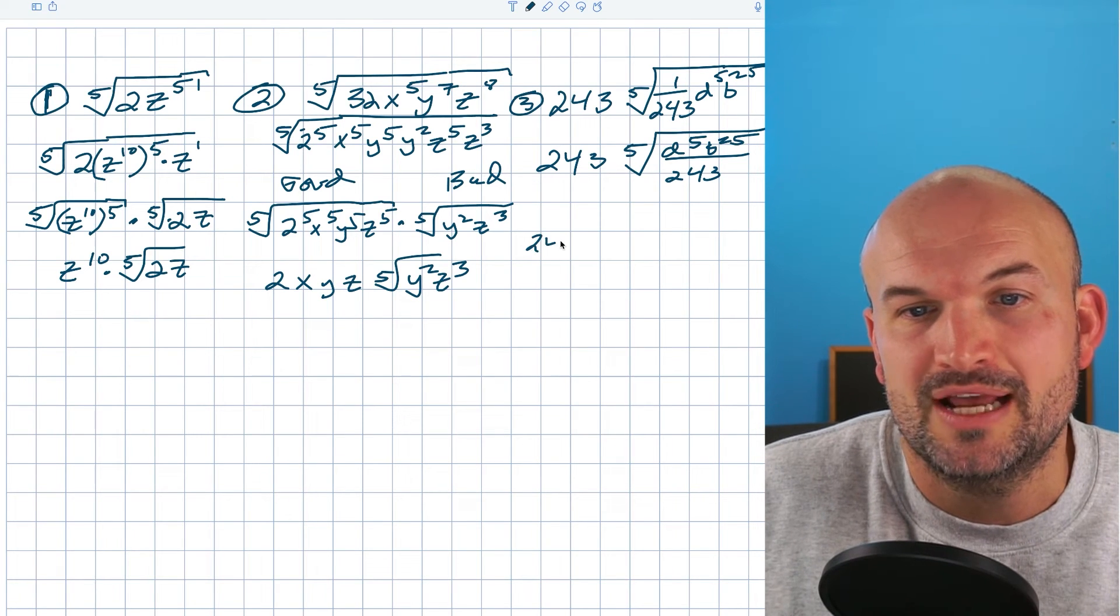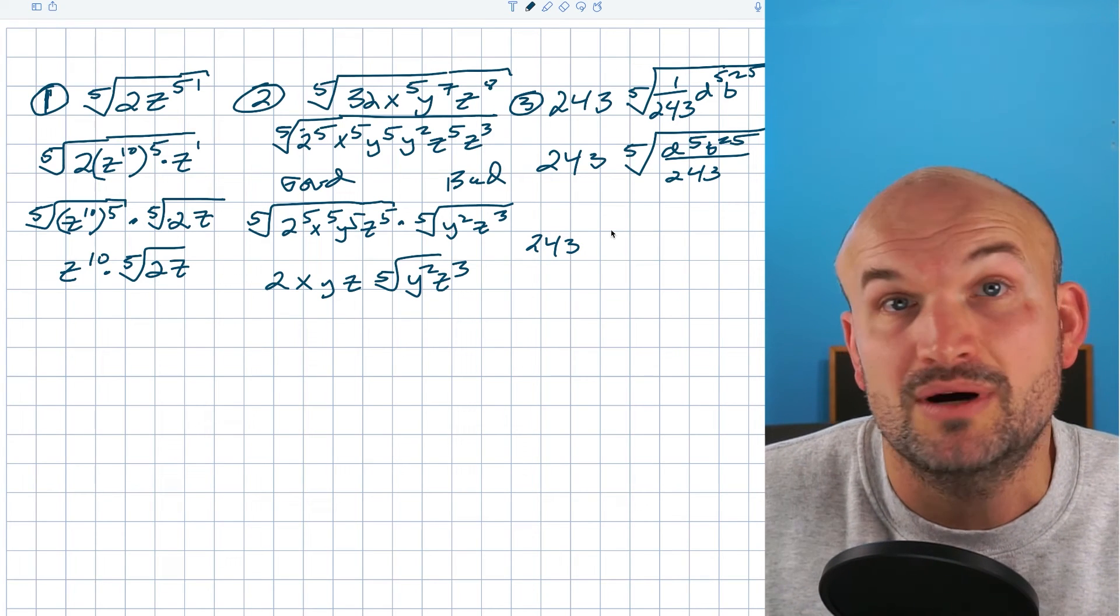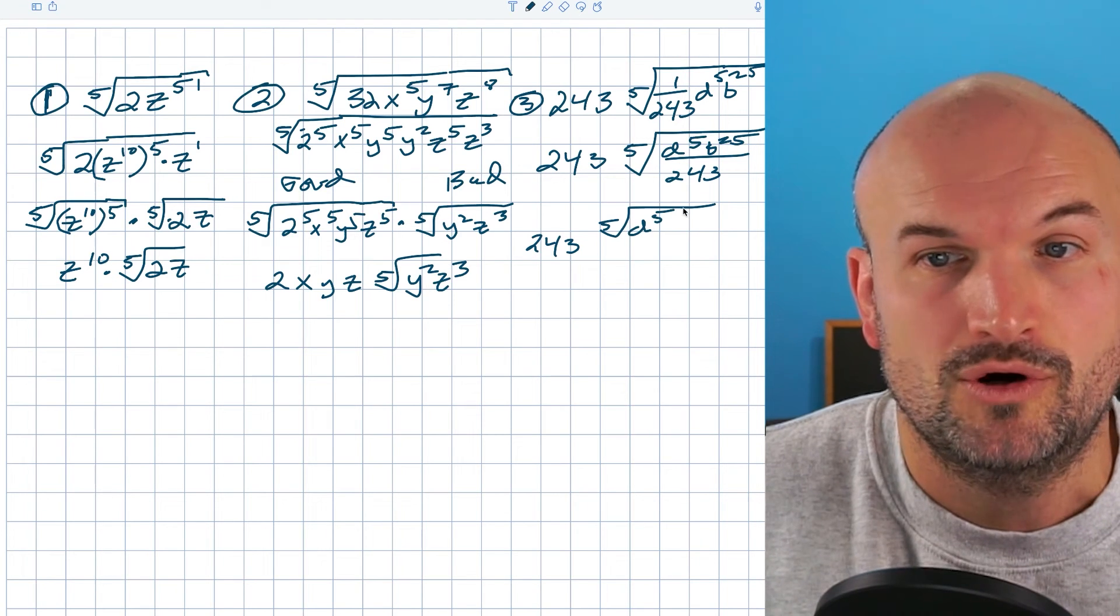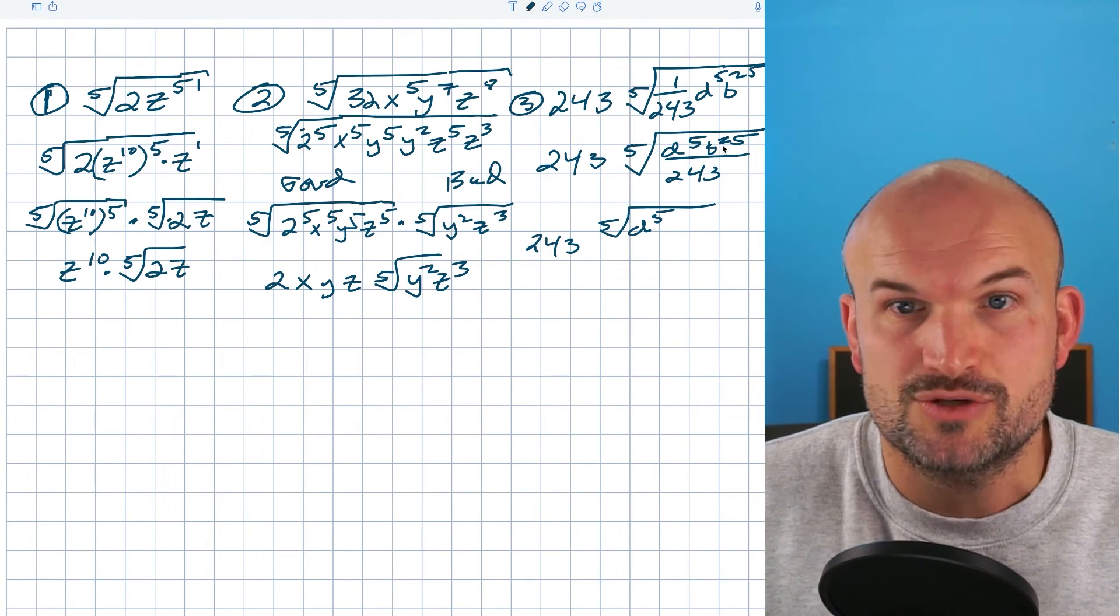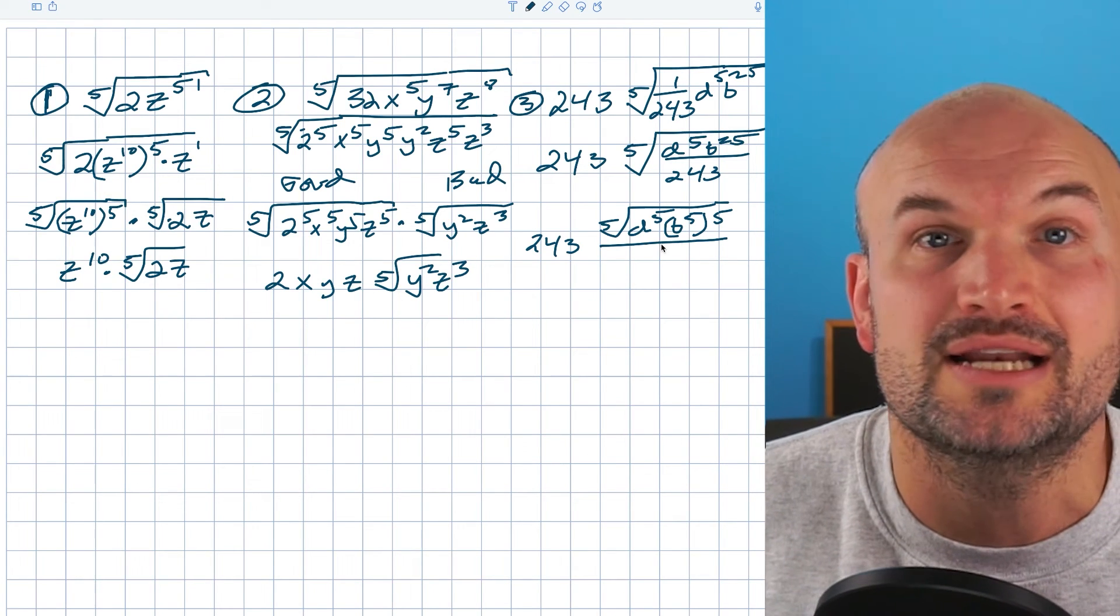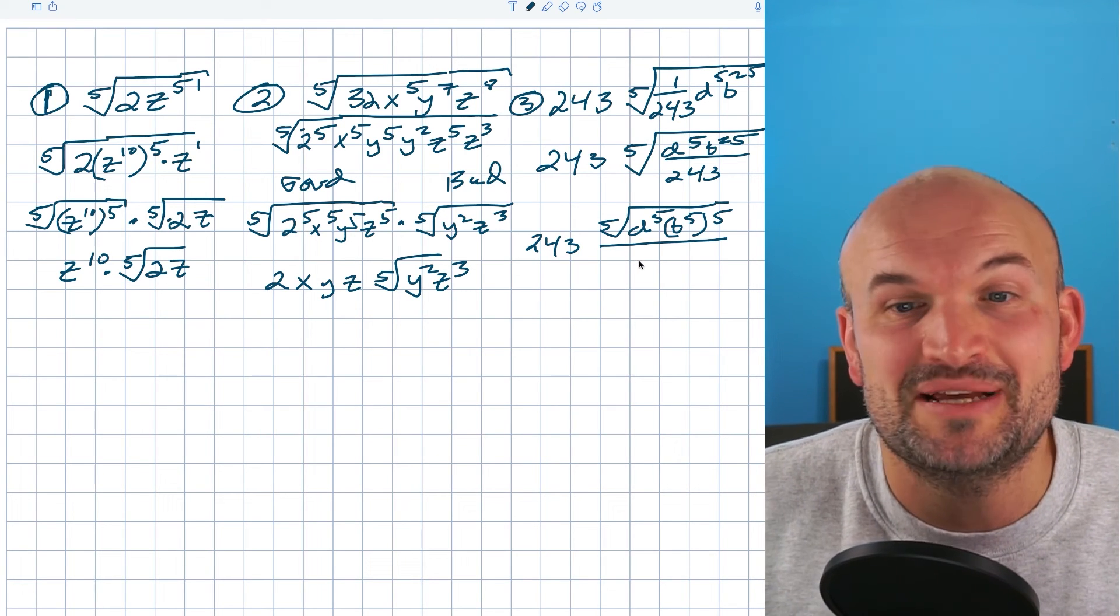So I have 243. Now we could probably simplify this being raised to the fifth power, since we're kind of in this mode now of simplifying. So let's go ahead and simplify this. So I already have d to the fifth. That's cool. Can I rewrite b to the fifth power as 25? Yeah, that's just going to be b to the fifth raised to the fifth. And then what about 243? Can I raise a number to the fifth power to get 243? And guess what? We can. It's going to be three. So the fifth root of 243, I can rewrite that as 3 to the fifth power.